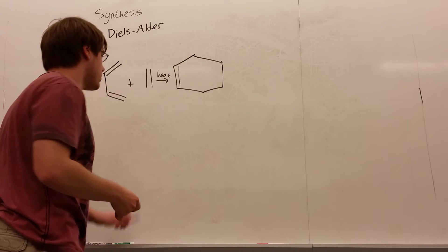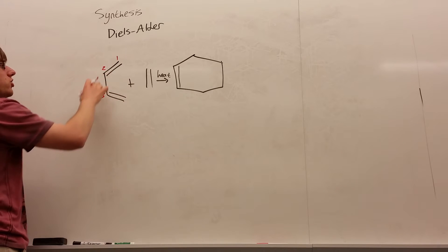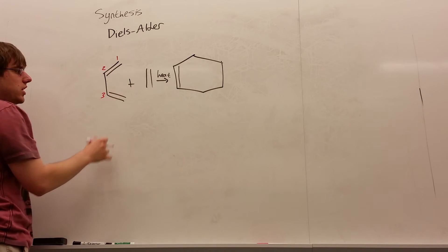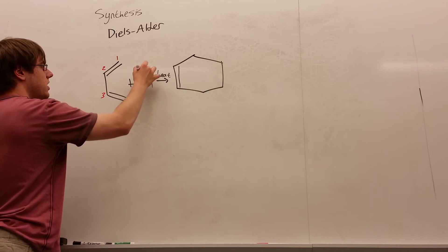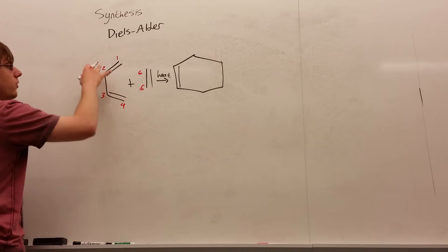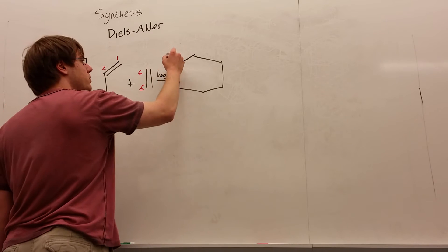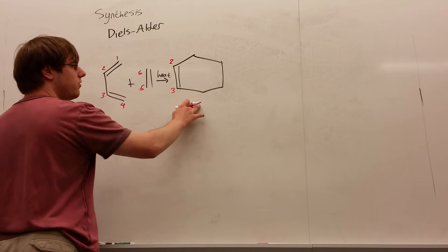Now the way you always remember where those things are is one, two, three. The two and three should always be the single bond between the two double bonds of your diene. One and four can be here and here, and you can switch them, but it doesn't really matter, and then five and six. These numbers are the more arbitrary ones, but always keep the single bond between two and three, because that will tell you where your double bond forms. The double bond will always form between two and three in the final ring.